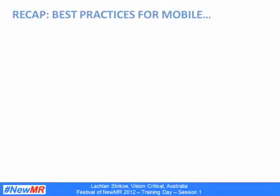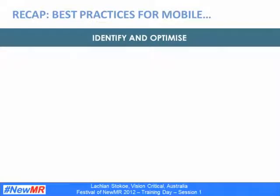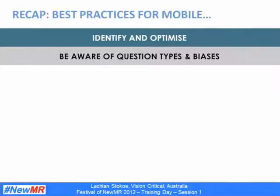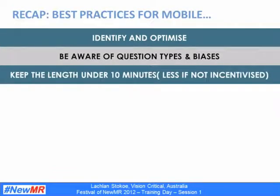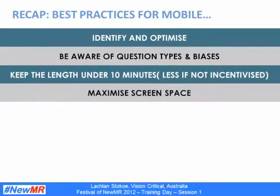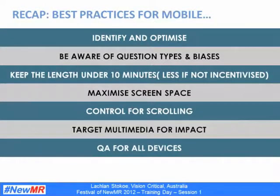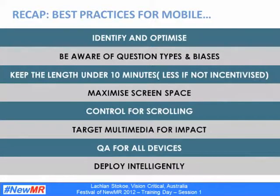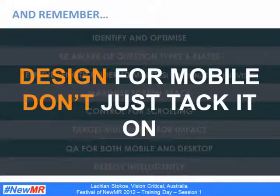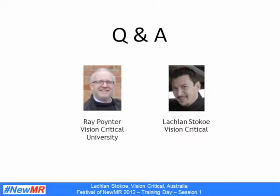To recap the best practice considerations for mobile research: identify and optimise for your particular circumstances; be aware of supported question types and potential biases; keep the length under 10 minutes, which is around 6-7 minutes of a traditional online survey; maximise your screen space for content, not clutter; control as much as possible for scrolling; use multimedia but don't go overboard; make sure you adequately QA for all devices; stop and think about the way you plan to deploy. And remember — design specifically with mobile in mind, don't just take it on as an afterthought.